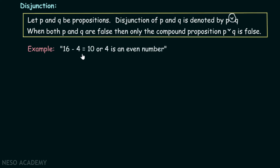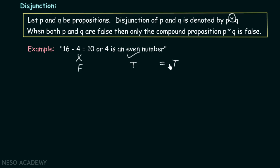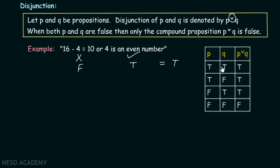For example: '16 minus 4 equals 10' — this is false. Or '4 is an even number' — this is true. Since this proposition is false and this one is true, the final result is true. In the truth table, when p is false and q is true, the result of p ∨ q is true. Only when both p and q are false will the compound proposition p ∨ q be false.